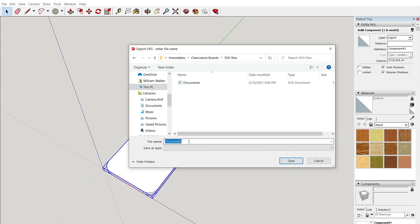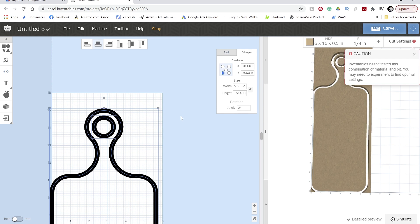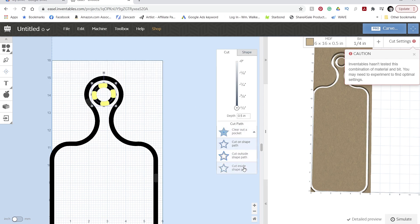I started out in SketchUp to lay out the design of my board with a few parameters in mind. Once I had my board designed, I made it into a component and exported an SVG file using the plug-in Faber.